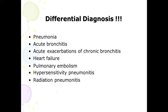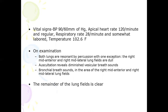After taking a proper history, you go for a physical examination. On examining the patient, his blood pressure was 90/60 mmHg, apical heart rate was 120 beats per minute and regular, and respiratory rate was 28 cycles per minute, somewhat labored. Temperature was raised at 102.6°F. On respiratory examination, both lungs are resonant on percussion with one exception: the right mid-anterior and right mid-lateral lung fields are dull.